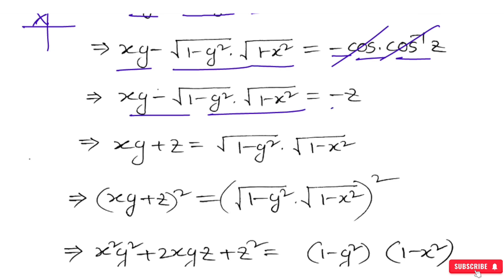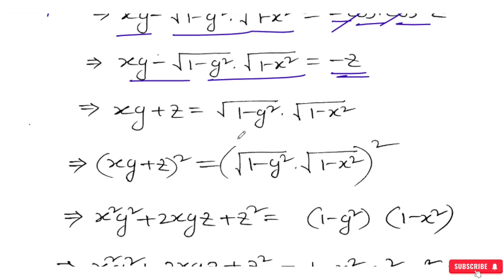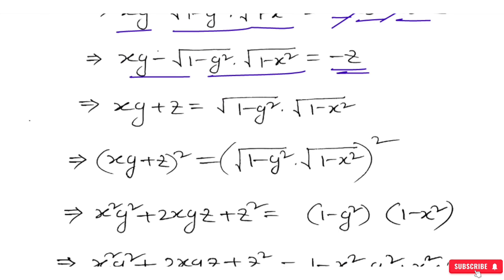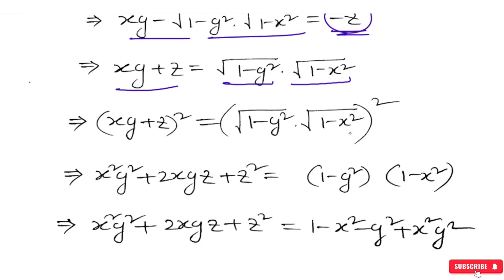We have to do minus z. We have a rule: root of 1−y² by root of 1−x² into root of 1−x². So xy plus z. Now we have to divide this. Then x² + y², the whole square. I'm going to get root over 1−y² into root over 1−x².